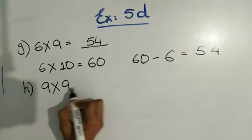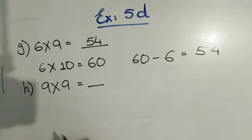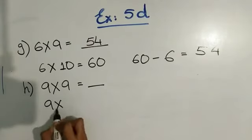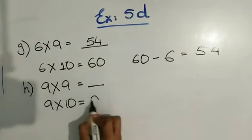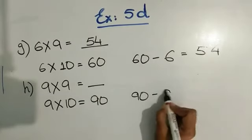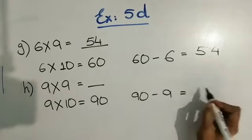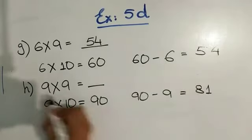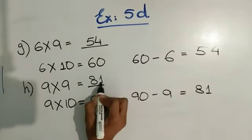Next question. 9 times 9 is equal to what? We don't know. So first we will multiply with 10, 9 times 10 is equal to 90. And then 90 minus 9, we will get 81. So 9 nines is equal to 81.